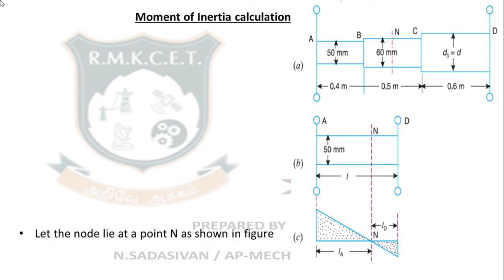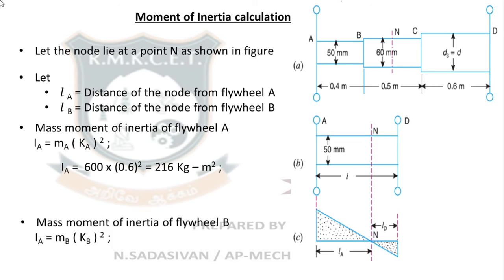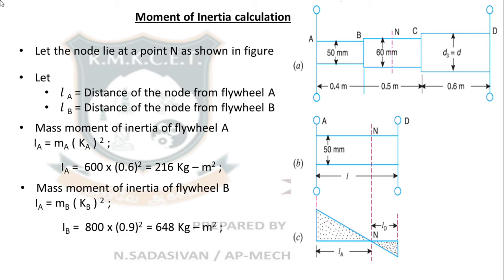Moment of inertia calculation: I = Mk². For flywheel A, mass Ma is 600 kg and radius of gyration Ka is 0.6 m, giving Ia = 600 × 0.6² = 216 kg·m². For flywheel D, mass Md is 800 kg and radius of gyration Kd is 0.9 m, giving Id = 800 × 0.9² = 648 kg·m².